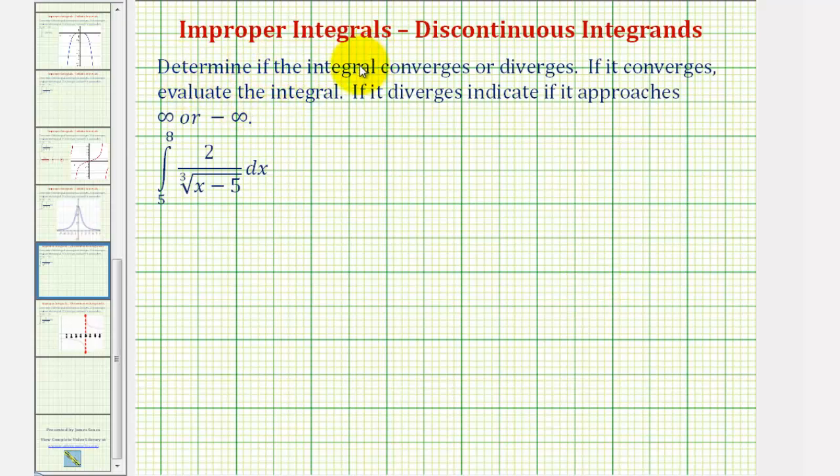Welcome to an example of an improper integral where we have a discontinuous integrand on the interval of integration. We want to determine if the integral converges or diverges. If it converges, we want to evaluate the integral. And if it diverges, we want to indicate if it approaches positive or negative infinity.